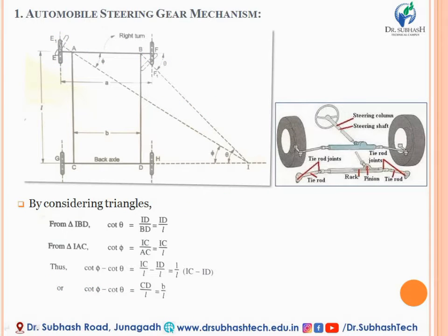Let's start with the first type of mechanism, that is the Automobile Steering Gear Mechanism. This is the mechanism especially used in case of 4-wheel automobile vehicles. Generally it is used for changing the direction of the wheel so as to move the automobile in the desired path. The motion between the wheels of an automobile and the road surface should be pure rolling, with no skidding between road wheel and road surface.